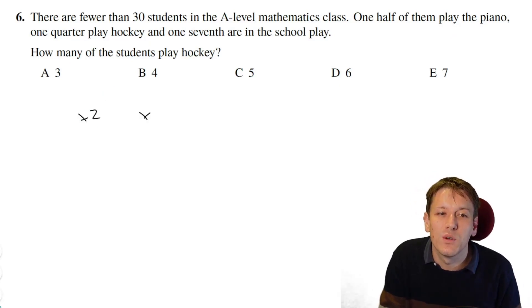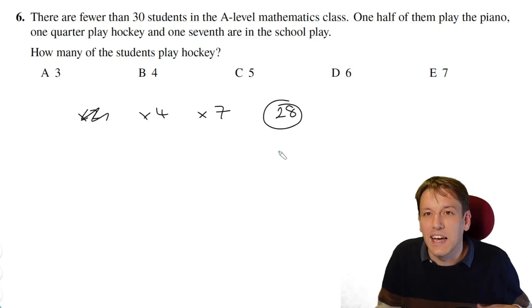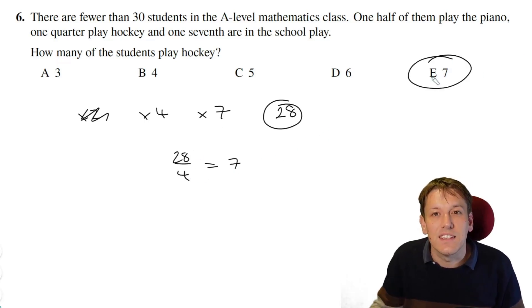So we need it to be a multiple of two, a multiple of four, and a multiple of seven. Obviously anything that's a multiple of four is automatically a multiple of two, so we don't have to worry about that. Four and seven don't have any factors in common, so the lowest common multiple of four and seven is four times seven, which is 28, and in particular that's the only multiple of four and seven that's smaller than 30. So there must be 28 students in the class, and it says how many play hockey. Well, it's a quarter that play hockey, so we've got 28 divided by four is seven, and the answer is E7.